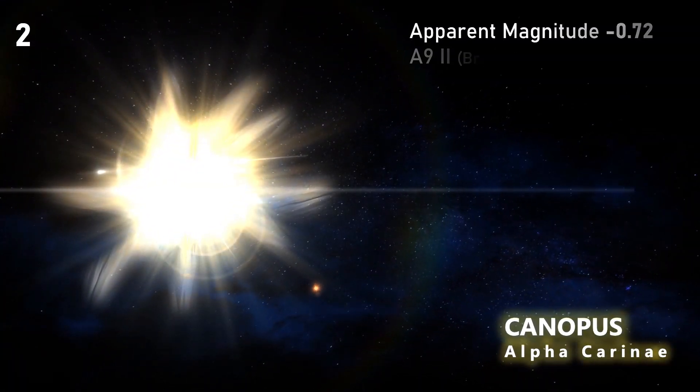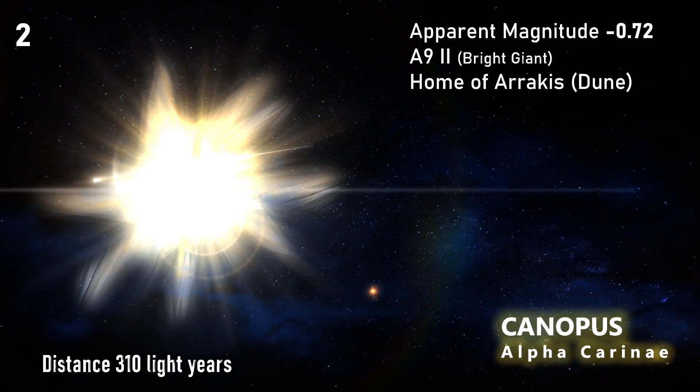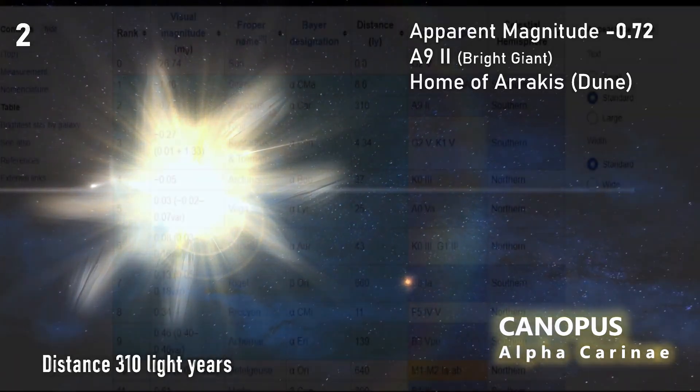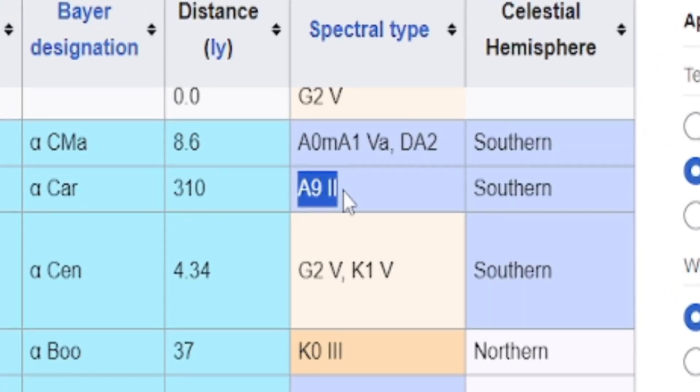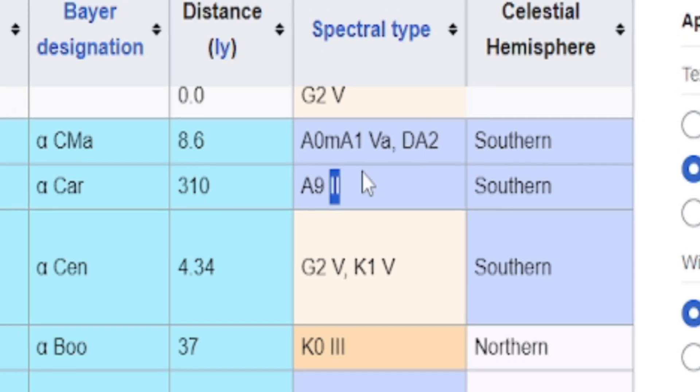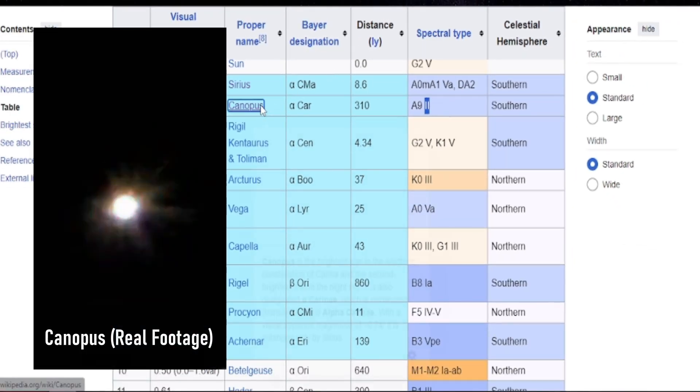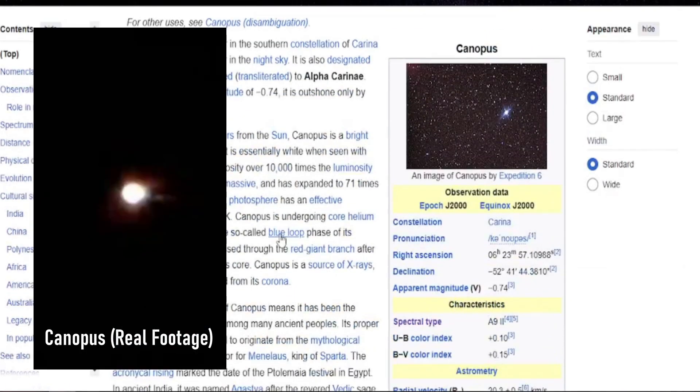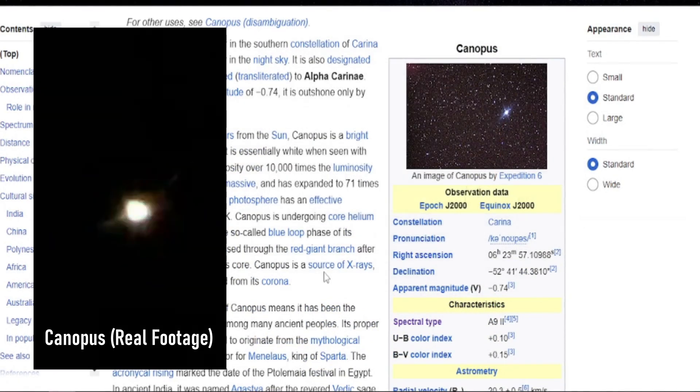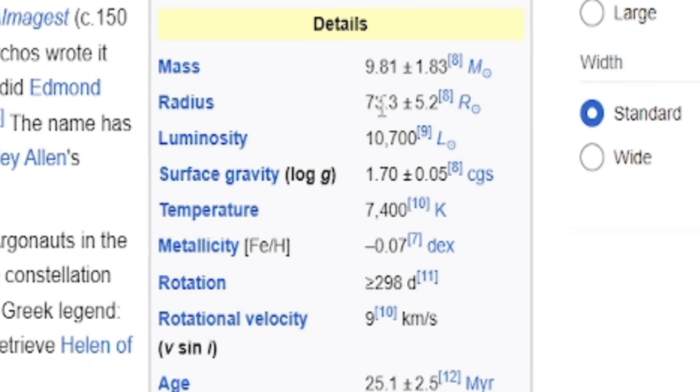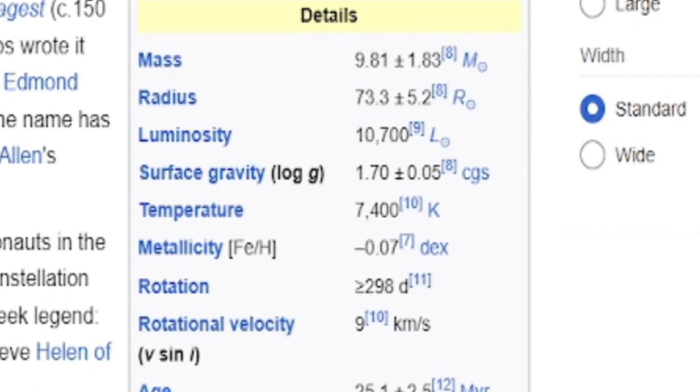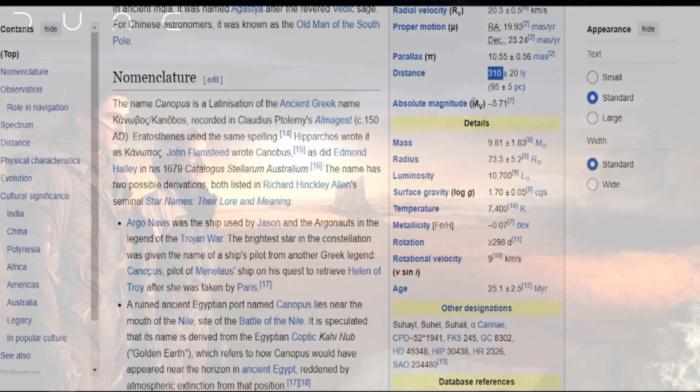Next in our list is the beautiful Canopus. Canopus is an interesting star. As you can see here, it's got a spectral type, another A class star, but this time it's got the two designation at the end, which means it's a very large giant star. I always think of Canopus as being an in-between star because it's not quite big enough to be classed as a supergiant and it's too big to be classed as a giant. It's almost 10 times the mass of the sun, so it's a ginormous star, with a radius of 73.3. Canopus is 310 light years away, so it's quite a long way away.